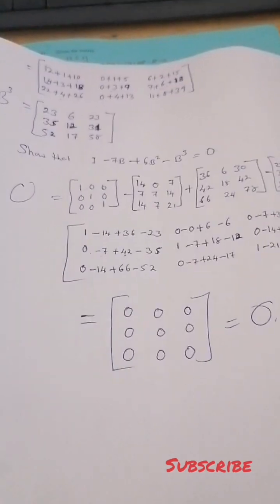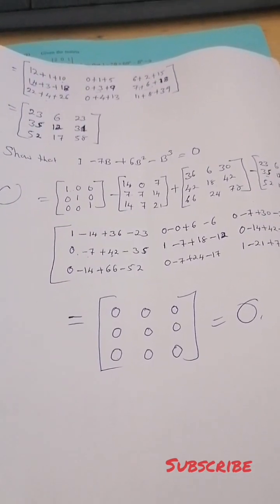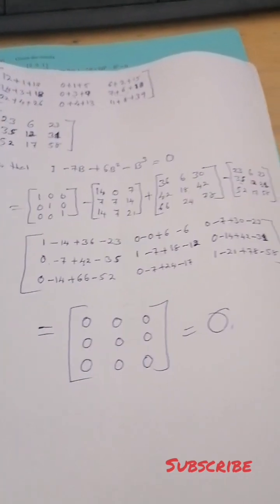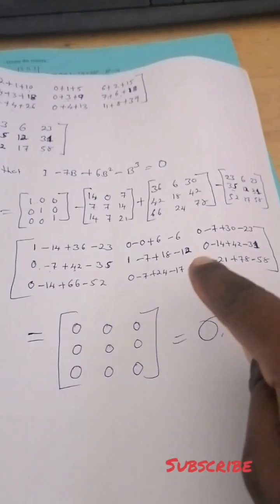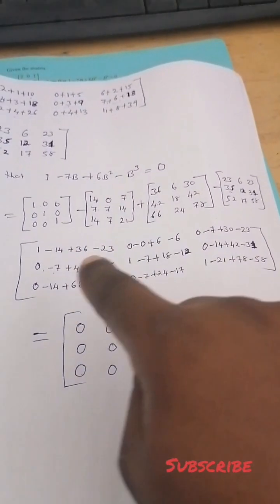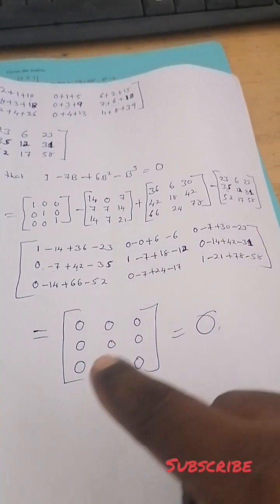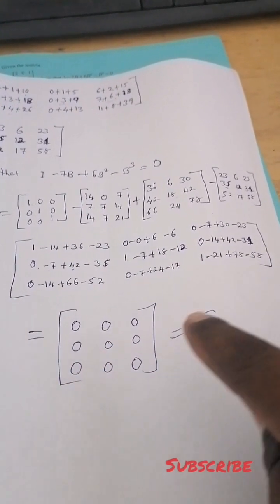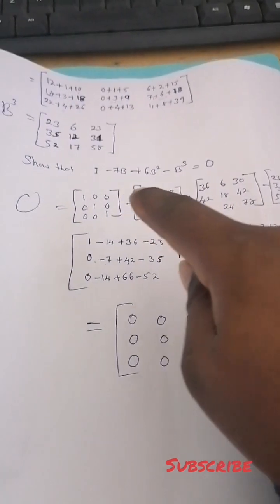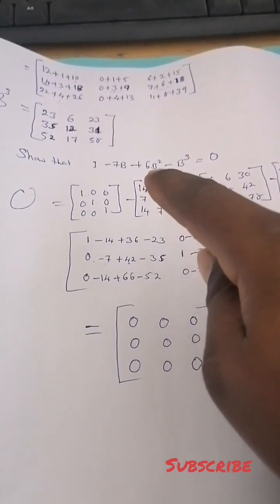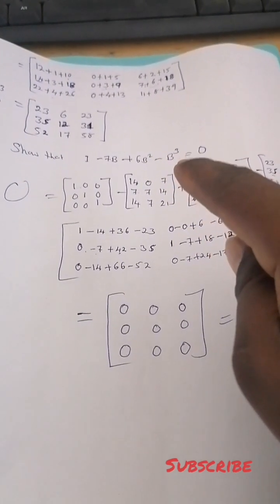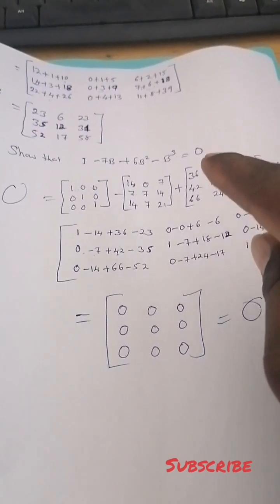When you solve this by subtracting and adding all the matrices, you are going to get zero. So you have shown that the equation — identity matrix minus 7B plus 6B squared minus B cubed — equals zero. That is what we needed to show.